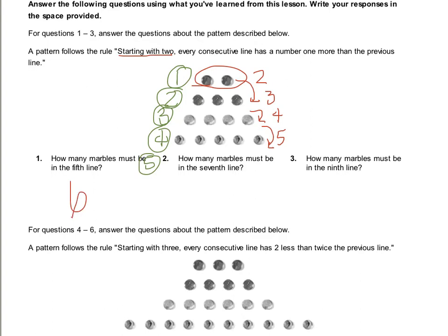You may also notice a different type of pattern — there are sometimes multiple ways to see patterns. Some of you may notice that the number of marbles is one more than the line number. Line one had two marbles, line two had three, line three had four, line four had five, line five has six. So line nine is going to have ten — it will always have one more marble than the line number.